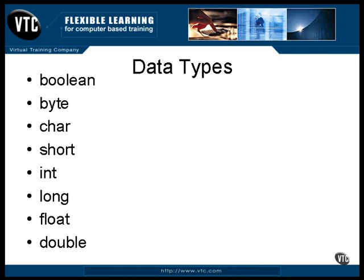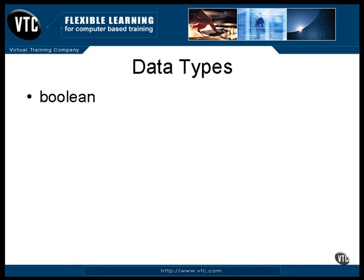Let's take a quick look at each one of these types. A boolean data type has no specific size, but it is conceptually one bit in size, and that bit is either on or off. It can only take on one of two values, represented by keywords in the Java language — true or false. This is not an integer; there is no direct way to convert a boolean to an integer or an integer to a boolean.